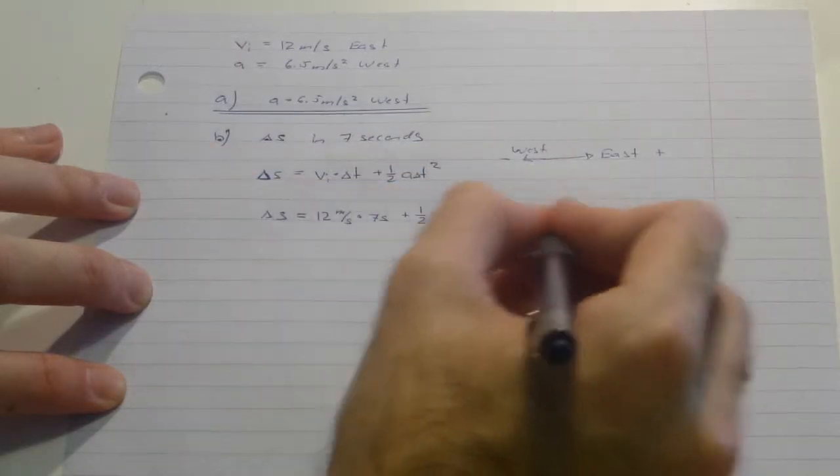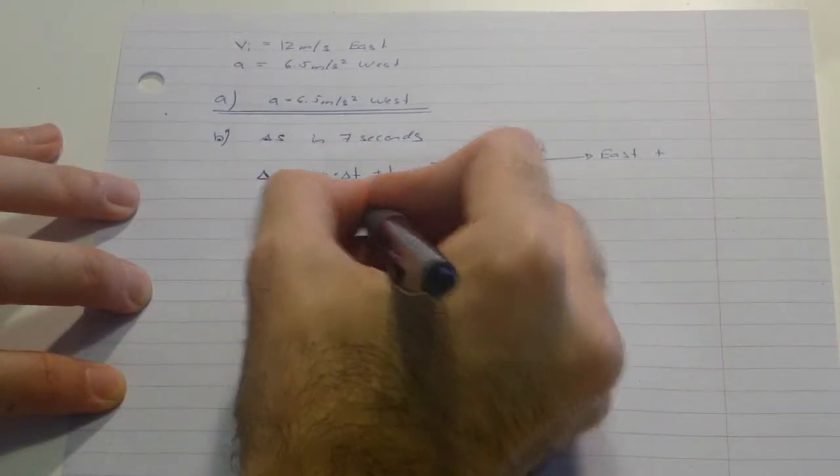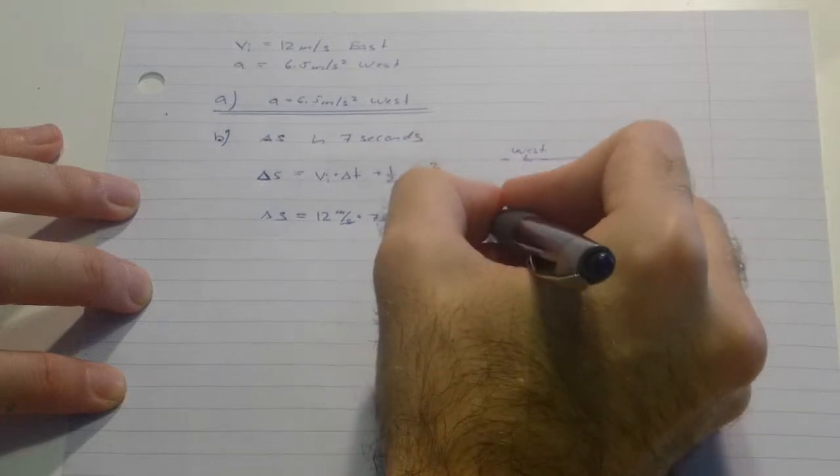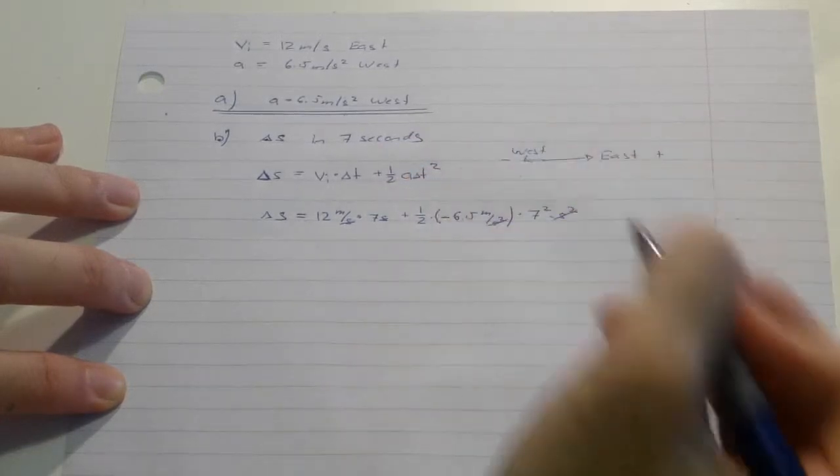If I look at the units to check if my formula is right, seconds go away and I'm left with meters. Second squares go away and I'm left with meters.